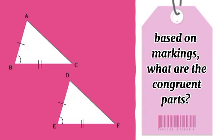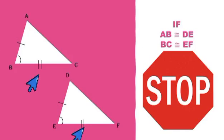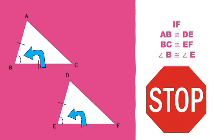Sa ating first figure, meron tayong dalawang triangles with markings. We have triangle ABC and triangle DEF. If side AB is congruent to side DE, side BC is congruent to side EF, and angle B is congruent to angle E.